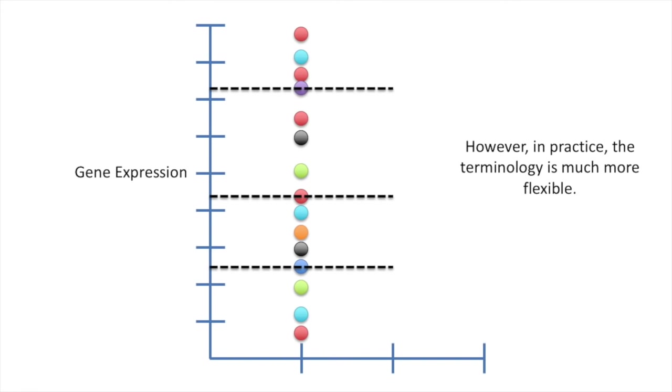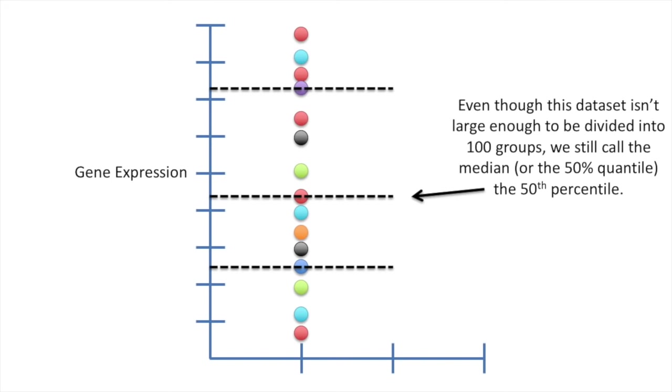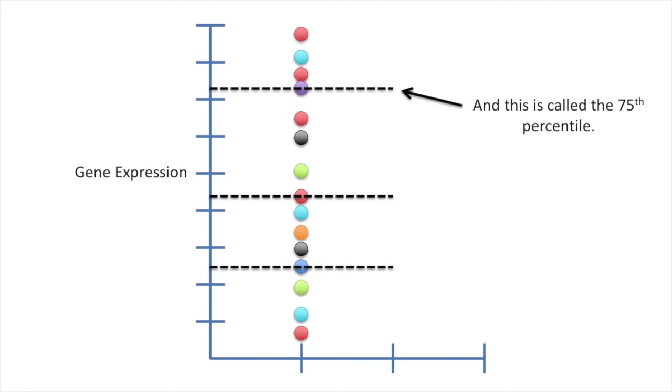However, in practice, the terminology is much more flexible. Even though this dataset isn't large enough to be divided into 100 groups, we still call the median, or the 50th quantile, the 50th percentile. And this is called the 75th percentile. And this is called the 25th percentile.